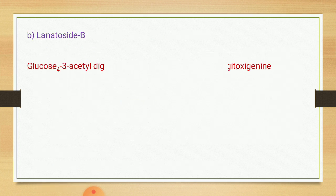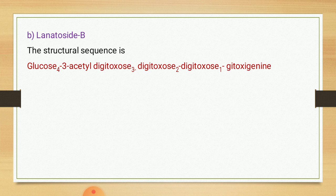Similarly, the second glycoside in digitalis lanata is lanatoside B. In the case of lanatoside B, the aglycon part is gitoxigenin, and the glycon part is the same as lanatoside A. So the structural sequence of lanatoside B is: gitoxigenin → digitoxose 1 → digitoxose 2 → acetyl-digitoxose 3 → glucose.